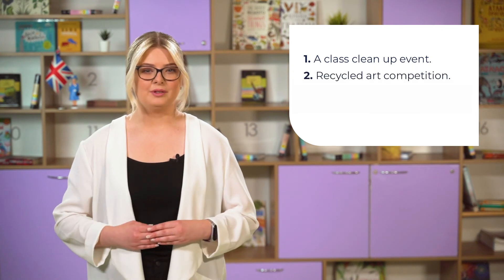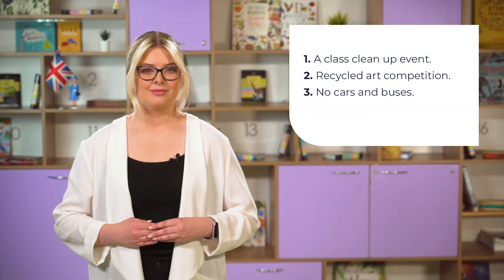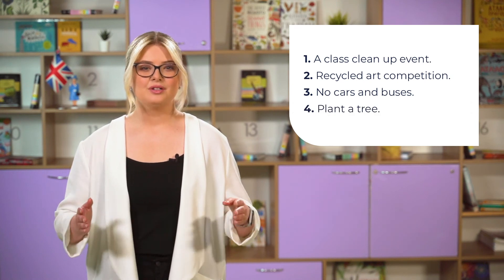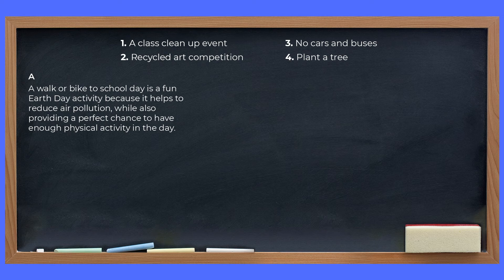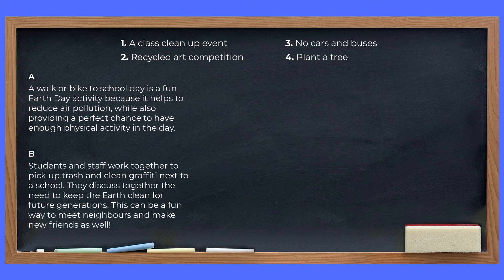There are some other things that students can do to save our planet, among them a class cleanup event, recycled art competition, no cars and buses day, and planted tree activity. Let's read together and match the titles with the correct paragraphs. A: Walk or bike to school day is a fun Earth Day activity because it helps to reduce air pollution, while also providing a perfect chance to have enough physical activity in the day. B: Students and staff work together to pick up trash and clean up graffiti next to a school. They discuss together the need to keep the Earth clean for future generations, and this can be a fun way to meet neighbors and make new friends as well.